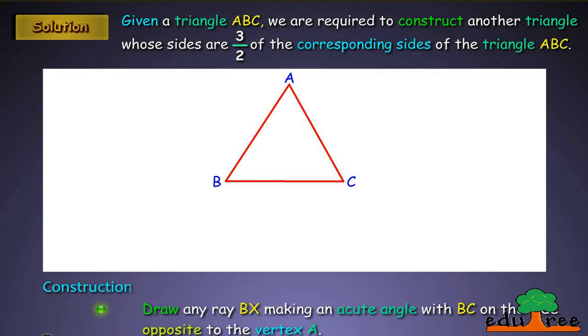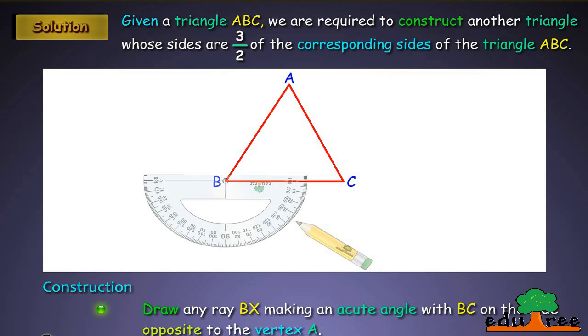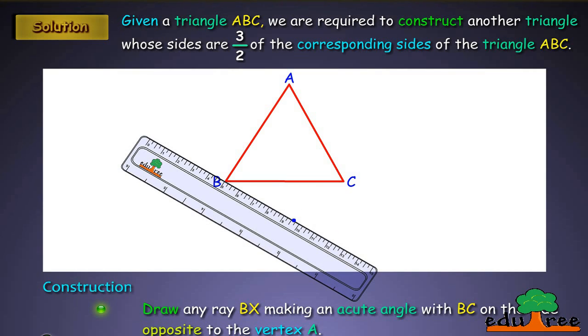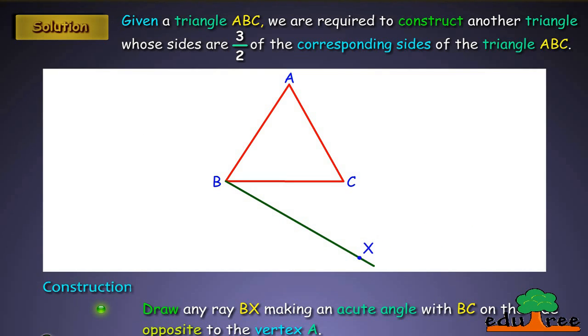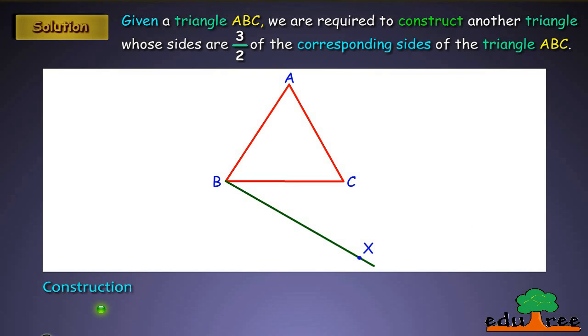Construction: Draw any ray BX making an acute angle with BC on the side opposite to the vertex A. Locate 4, the greater of 3 and 2 in 3/2, points B1, B2, B3, and B4 on BX.